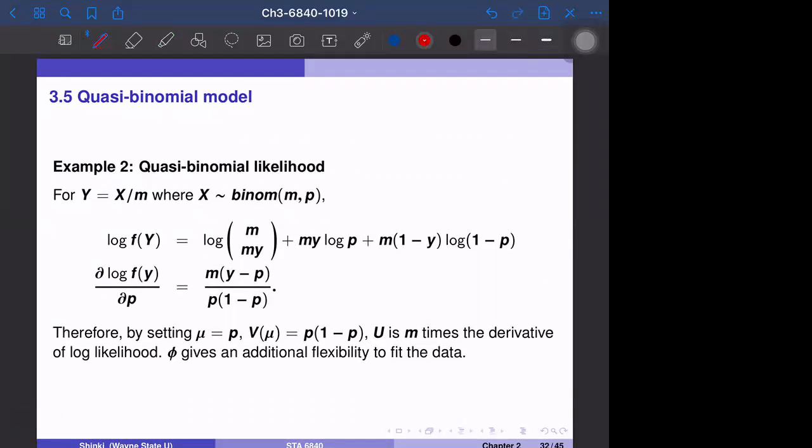For this section we are studying the quasi-binomial model. The next example is quasi-binomial likelihood. Suppose that y is the proportion x over m. For simplicity, you can think the case that m is fixed. For now, you can think of varying m, but think about m is fixed.